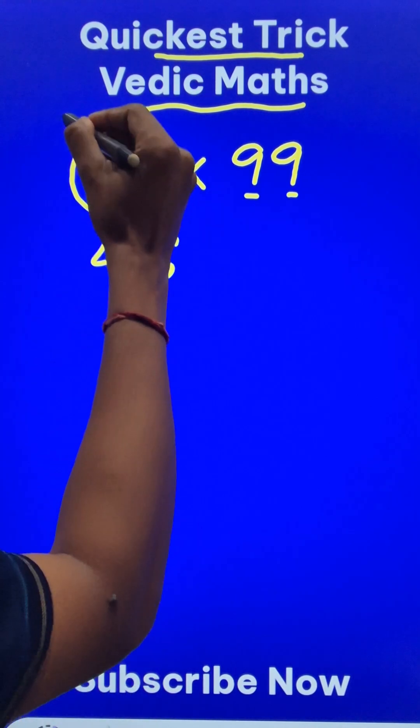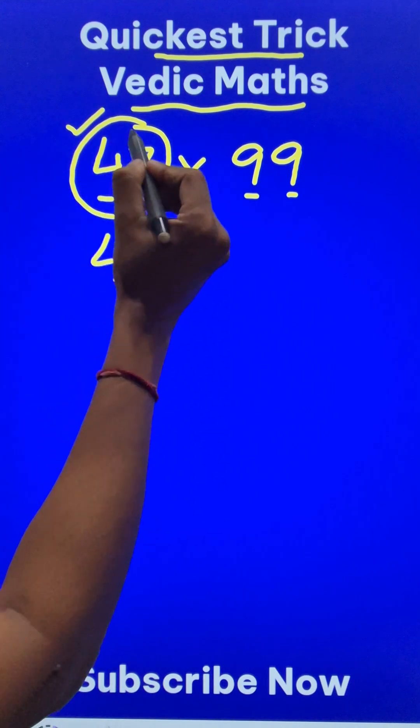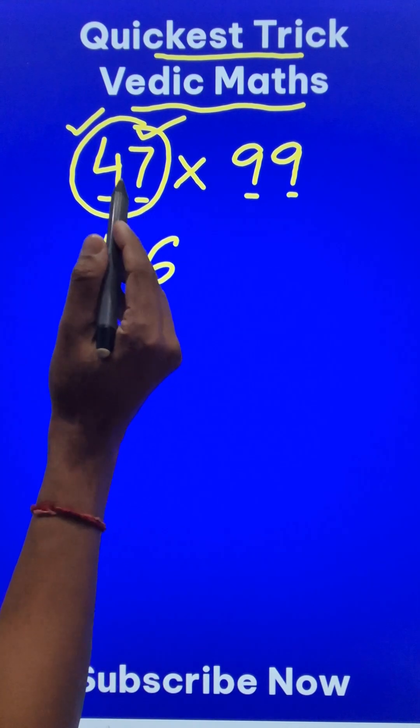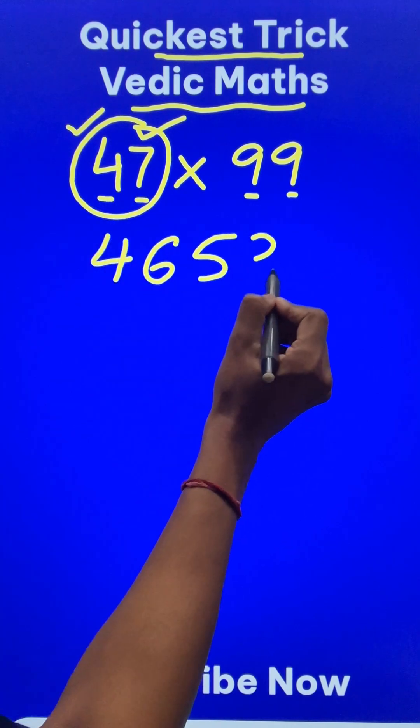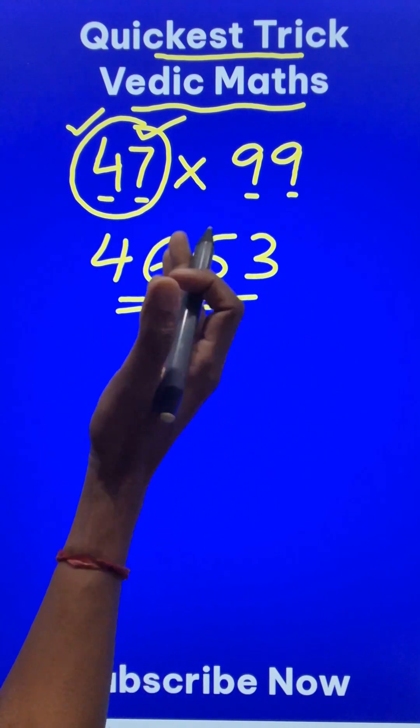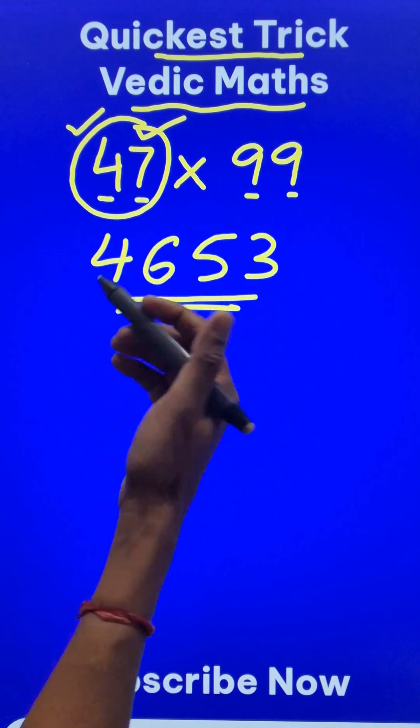And after that, all digits have to be subtracted from 9 and the last digit is to be subtracted from 10. So 9 minus 4 is 5 and 10 minus 7 is 3. And now you can pick up the calculators and check your answer. This holds good for three digit numbers also.